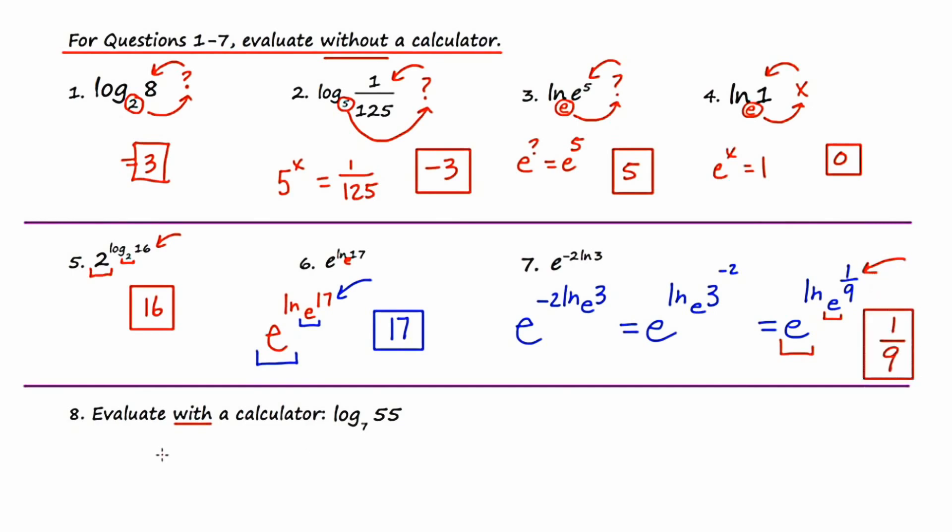Finally, number eight, evaluate with a calculator log of fifty five base seven. So seven to some mystery power, which I'll call X, is equal to fifty five. Well, there's no such power that I can just think of off the top of my head. So this is going to require the use of the change of base formula. I have the choice to use log or natural log. I'll use natural log.